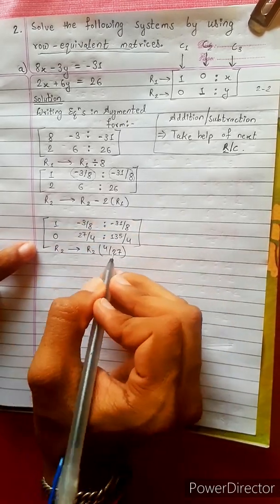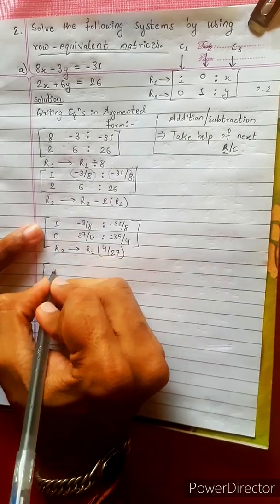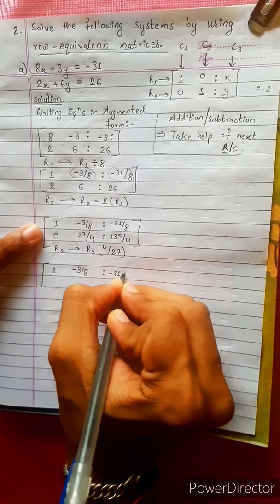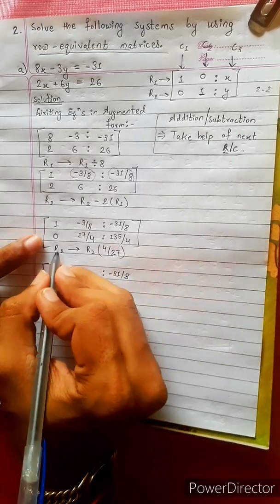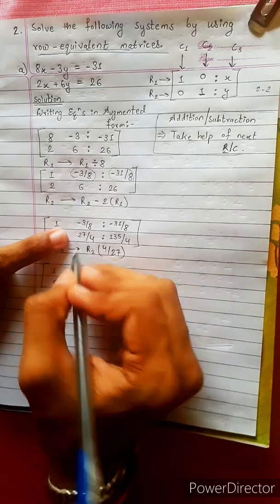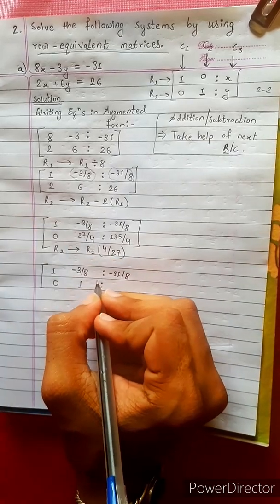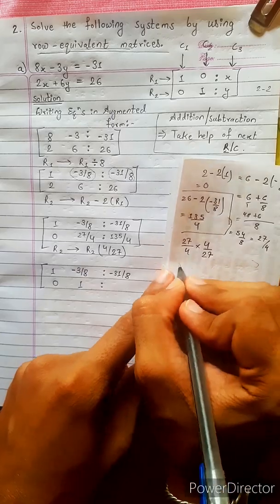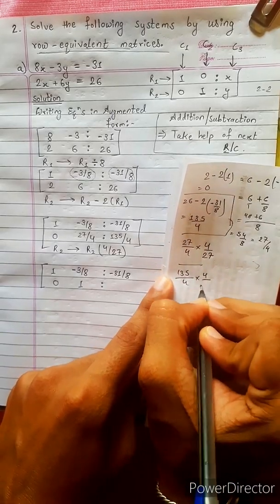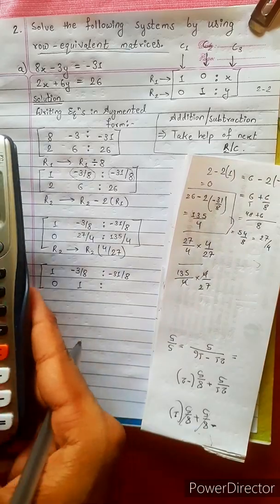R2 is changed by multiplying by 4 by 27. R1 is also changed: four by twenty-seven, four and four cancel, giving 135 divided by 27.